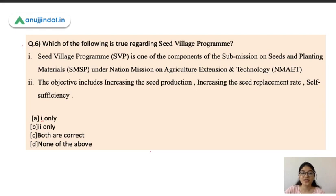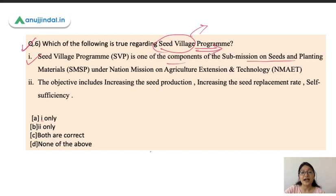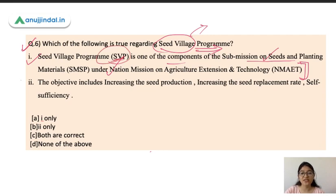Question 6: Seed village is a topic under seed production and seed processing. Which of the following is true regarding the seed village program? The first statement is that it is a component of the Sub-Mission on Seeds and Planting Materials under the National Mission on Agriculture Extension and Technology under the Ministry of Agriculture. The objectives include increasing seed production, increasing the seed replacement rate, and making farmers self-sufficient.